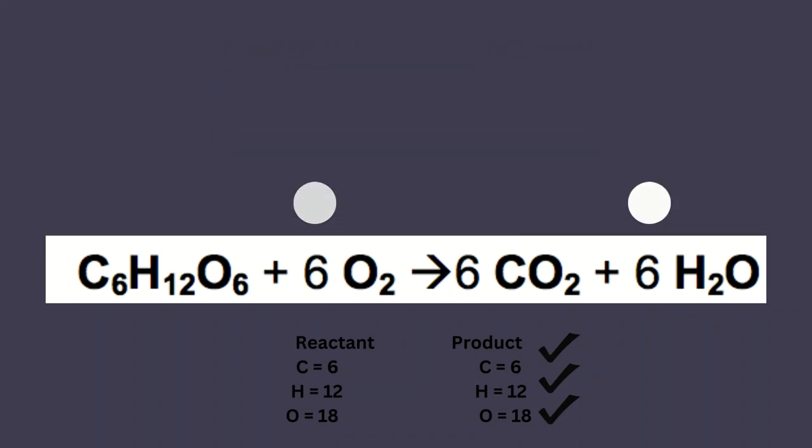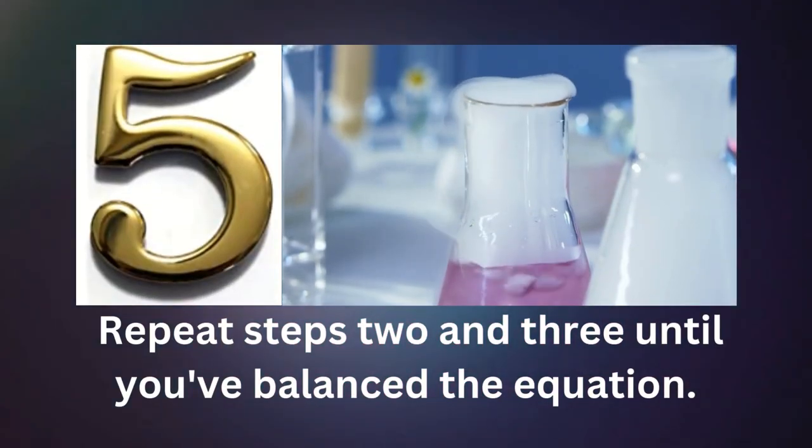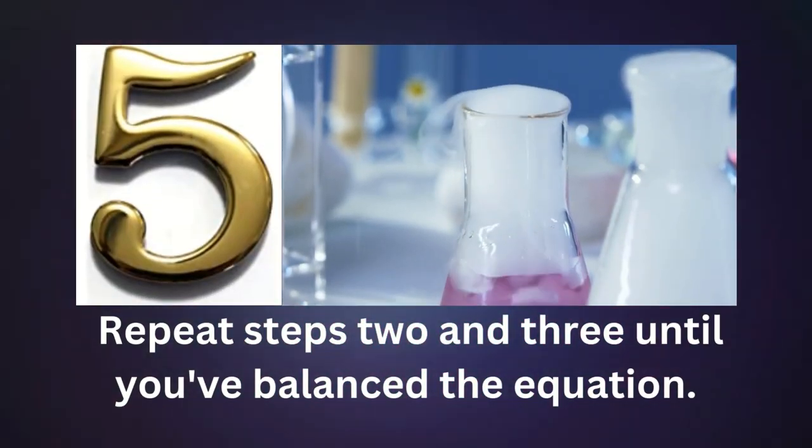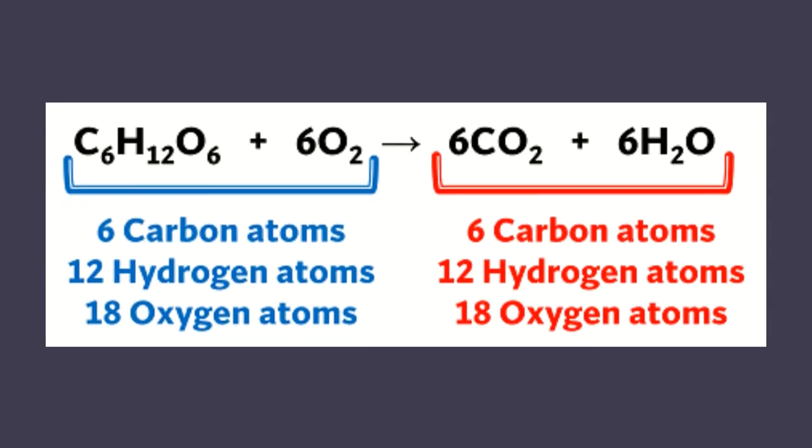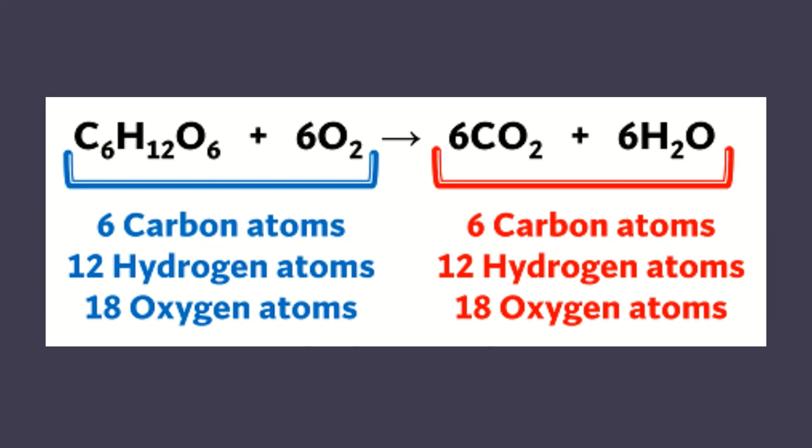Step number five. Repeat steps two and three until you've balanced the equation. Finally we get balanced equation in which number of elements in reactant side is equal to the product side.